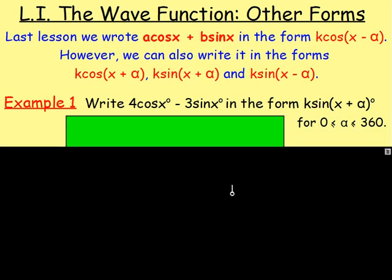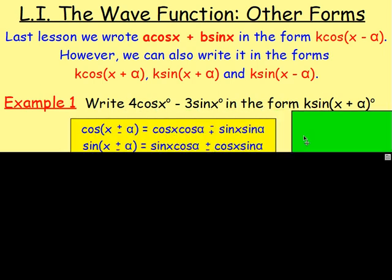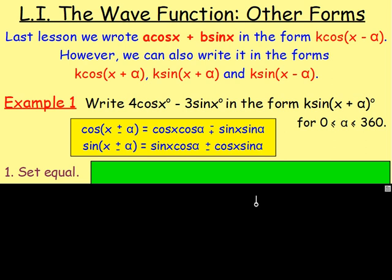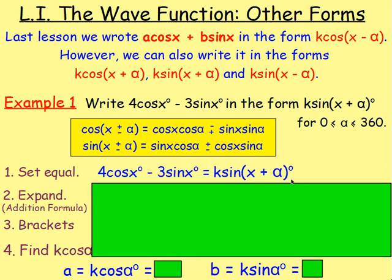So let's do a couple of examples. Example 1: write 4 cos x minus 3 sin x in the form k sin(x plus α), for α between 0 and 360 degrees. Starting this off the same way — you have k sin(x plus α), which should be ringing some bells about the addition formula. So you set them equal: 4 cos x minus 3 sin x equals k sin(x plus α).